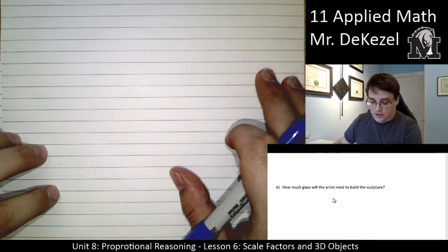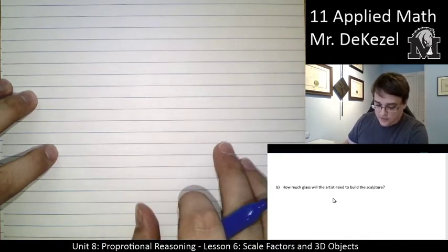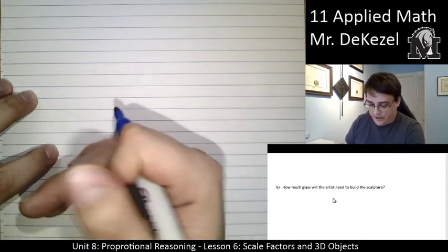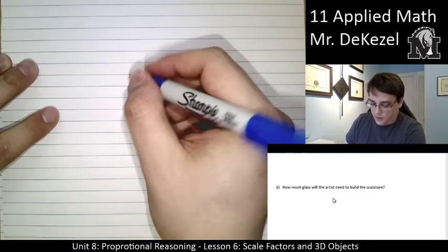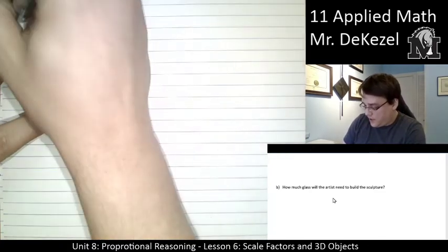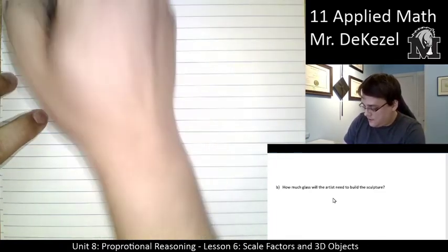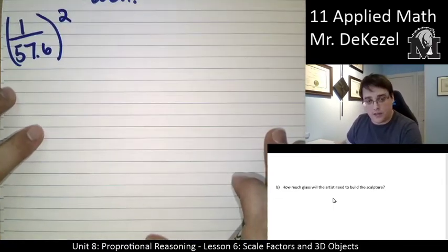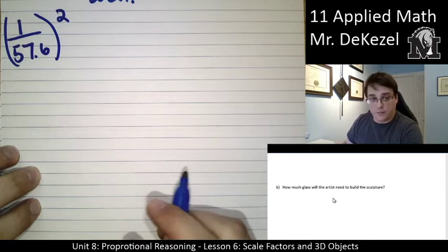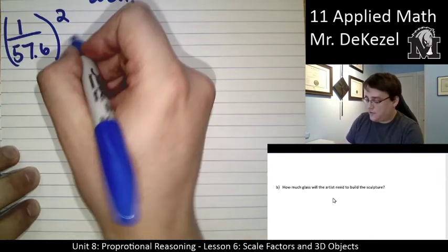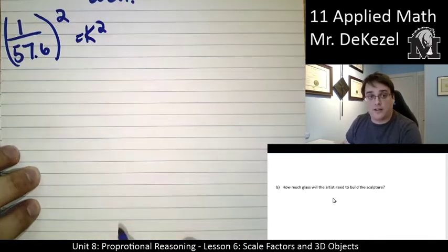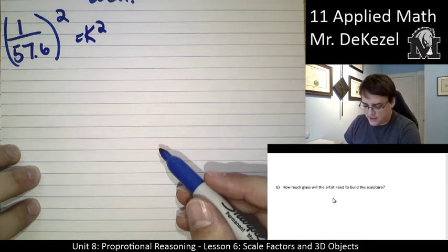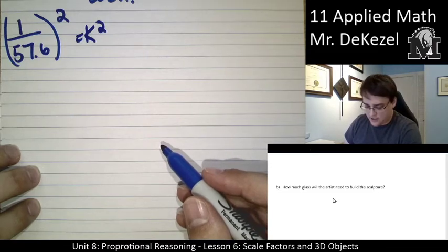How much glass will they need to use? So, we are going to scale up a surface area this time. So, that means the scale factor that we're going to use is going to be k squared. So, that is 1 over 57.6, and this is all squared. That's going to be our k squared for our scale factor for area. We need to find out what the area of this object is to start.